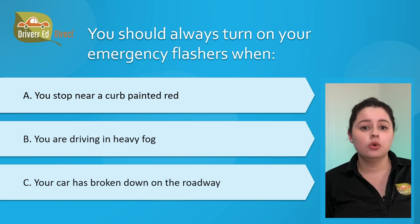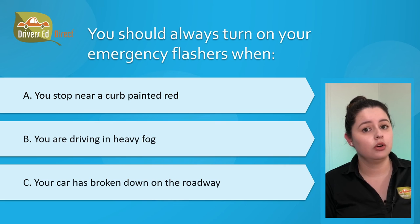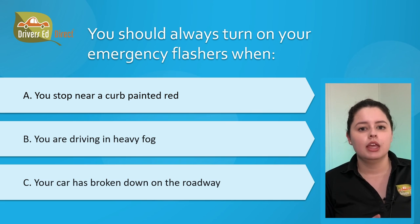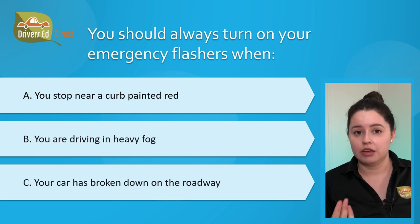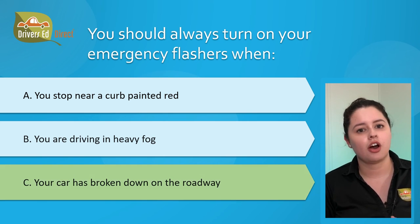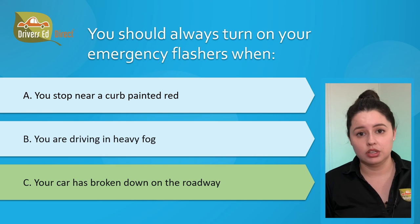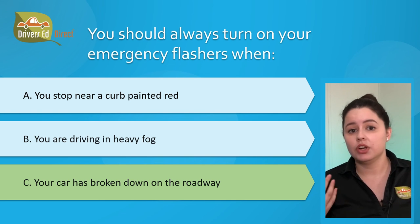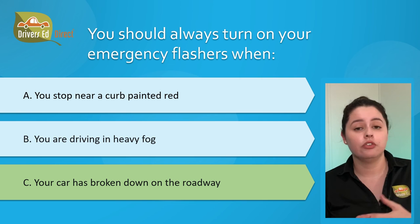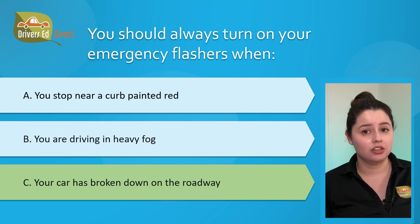Question number twenty-two: you should always turn on your emergency flashers when: A) you stop near a curve painted red, B) you are driving in heavy fog, or C) your car has broken down on the roadway. The correct answer is C, your car has broken down on the roadway. Turn on your emergency flashers anytime your car is stopped on or within 10 feet of a roadway, if there has been an accident, if you are in a funeral procession, or when moving at an extremely slow speed.